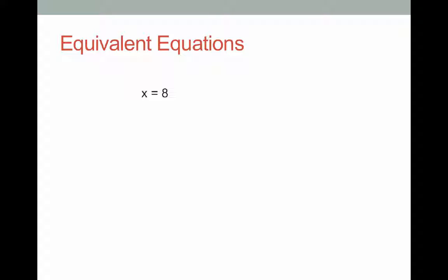An equivalent equation is where we manipulate this so that we do the same operation on both sides of that equal sign. For example, I would get an equivalent equation if I was to multiply both sides of my equation by 5. If I multiply the left side by 5, I would get 5x, because 5 lots of x is 5x. And if I multiply the right-hand side by 5, I would get 8 lots of 5, which is 40. These are equivalent equations, because x equals 8 in both of them.